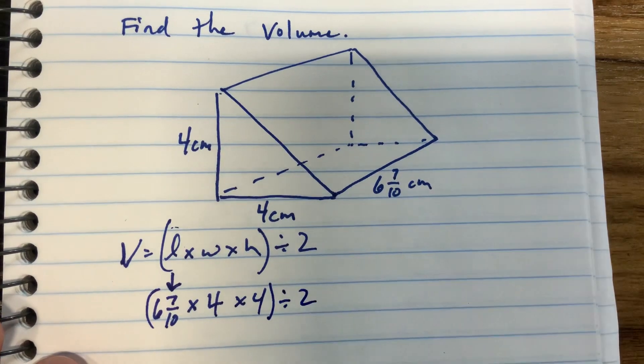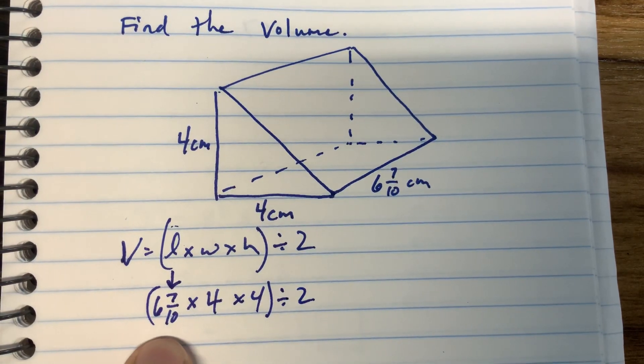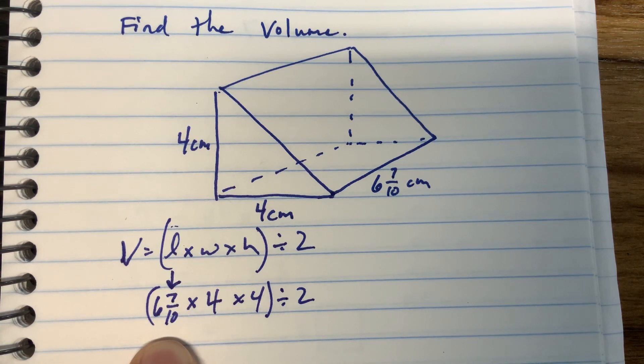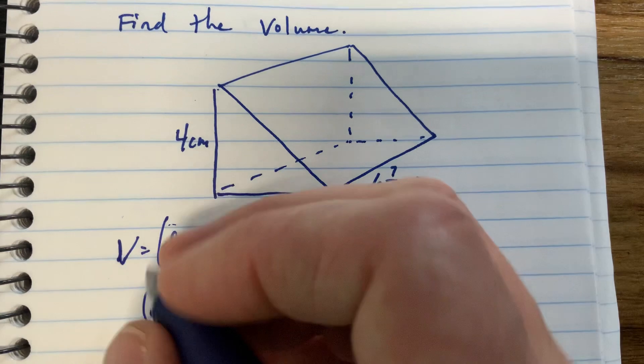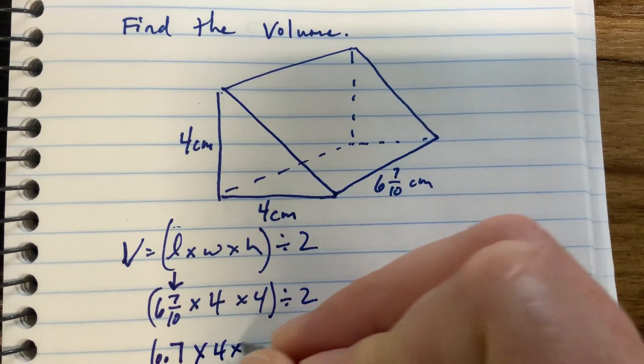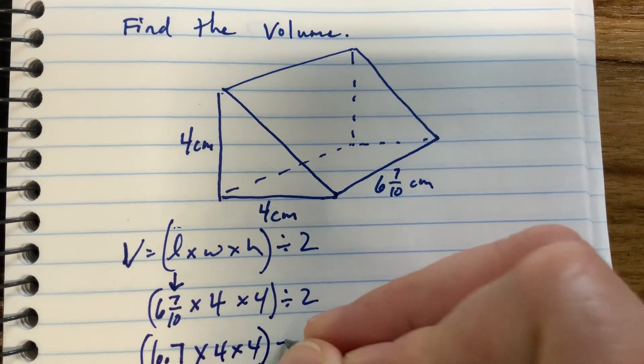Now I see one number with a fraction, but look at that fraction. That fraction is a super simple fraction because it's tenths, seven tenths, six and seven tenths. Look at that, write it as a decimal, and life gets easier.